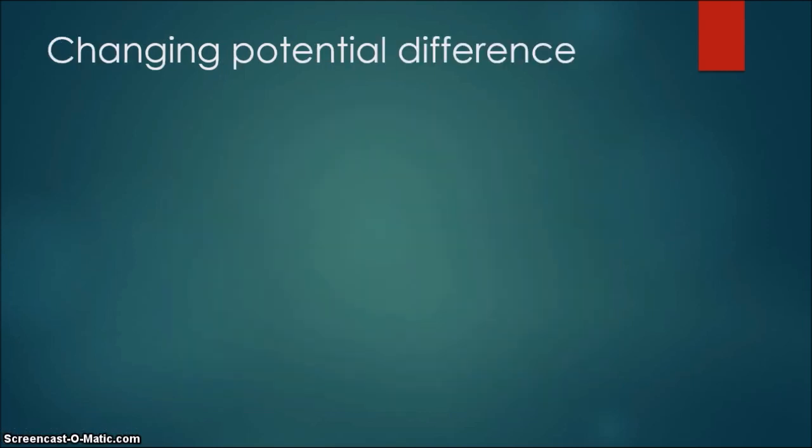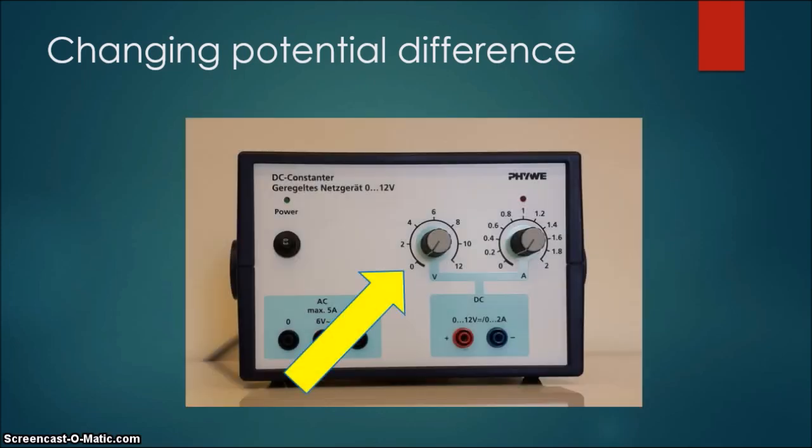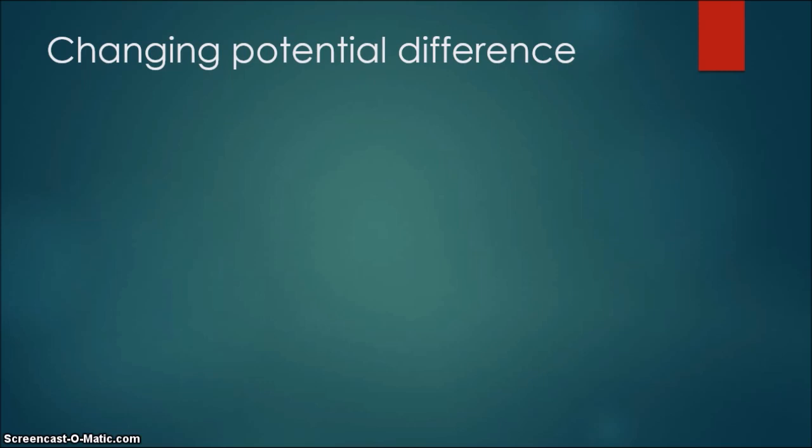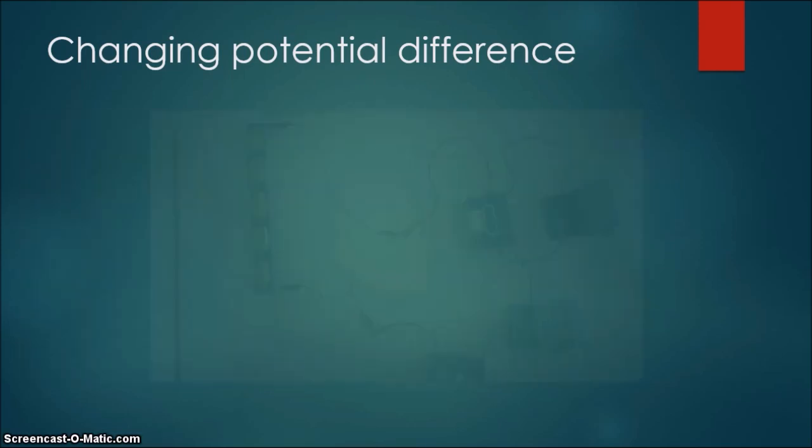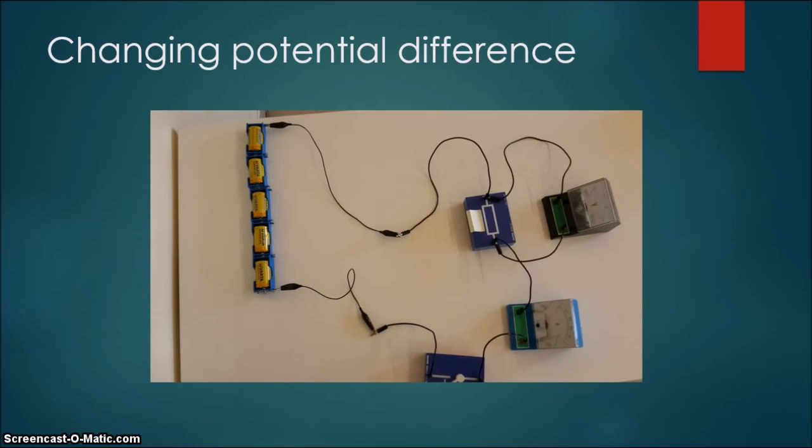After reading your data, arrange your power supply to have a smaller voltage value. If you are using cells, you can change the potential difference by changing the number of cells in every trial.